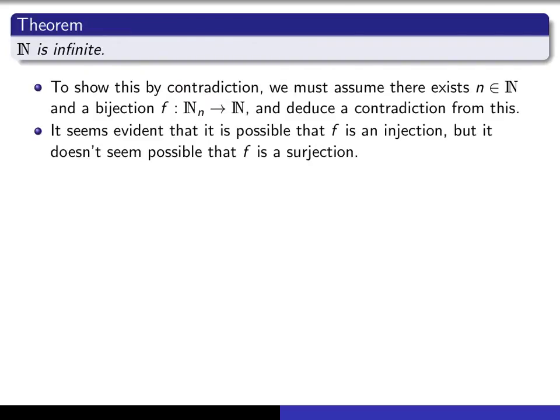Suppose we have a bijection from ℕₙ, the set of natural numbers from 1 through n, into ℕ. What should be impossible about that? Well, it seems clear that we can make an injection, a one-to-one function from ℕₙ into ℕ, but it doesn't feel as if it's possible that there's a surjection, an onto function from ℕₙ to ℕ. But how do we show that? How do we argue it in a precise way?